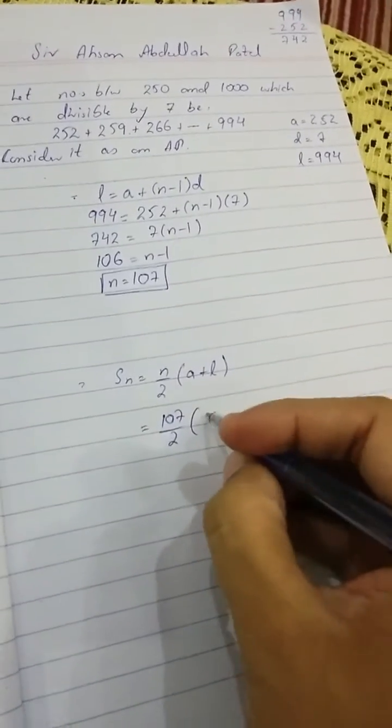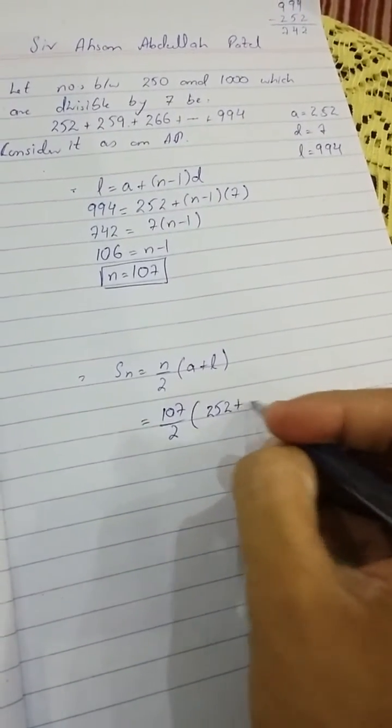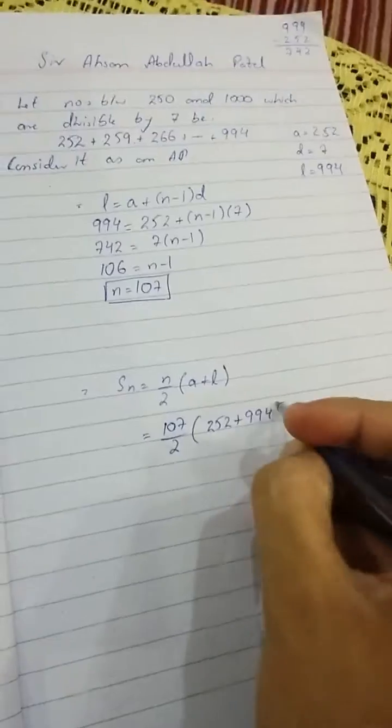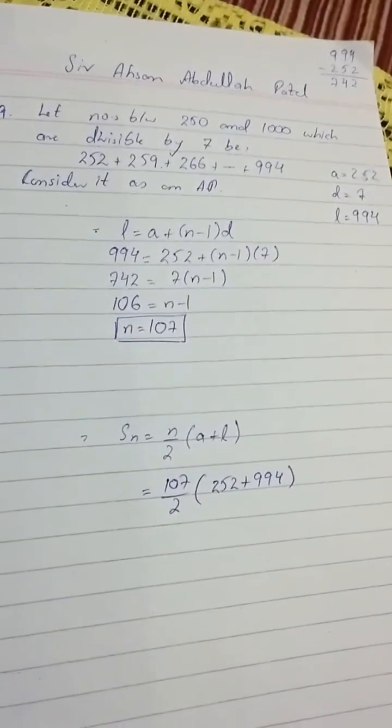107/2, we have 252 and last term 994. The sum calculation will continue...